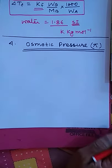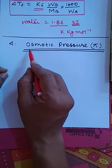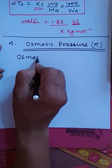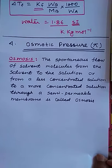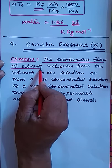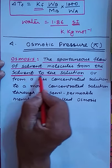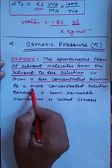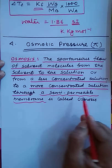The next colligative property is osmotic pressure, represented by π. Before explaining osmotic pressure, I would like to explain osmosis. Osmosis is the spontaneous flow of solvent molecules from the solvent to the solution, or from a less concentrated solution to a more concentrated solution, through a semi-permeable membrane.